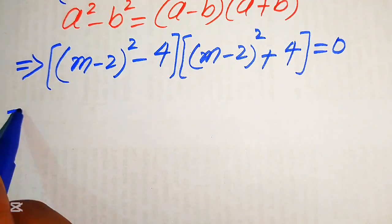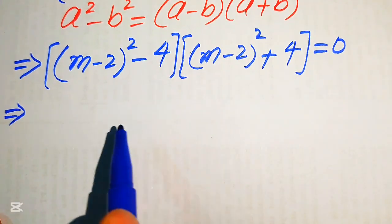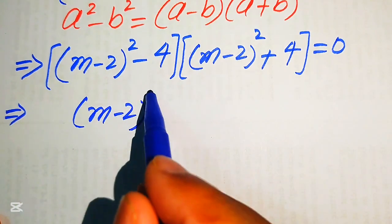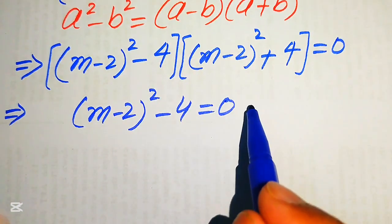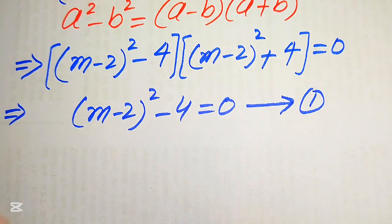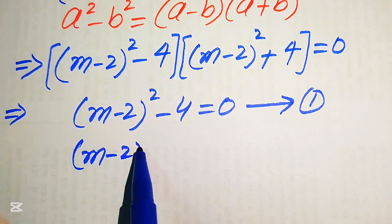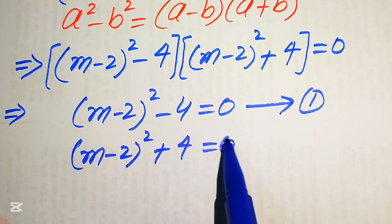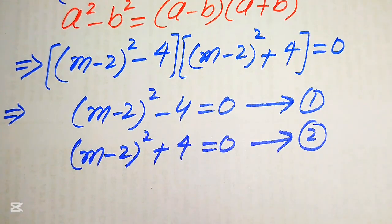We divide this into two cases. The first case is (m minus 2) squared minus 4 equals 0, which we call Equation 1. The second case is (m minus 2) squared plus 4 equals 0, which we call Equation 2.